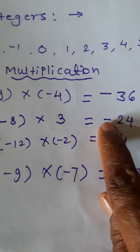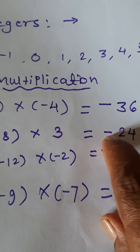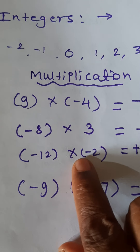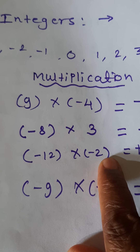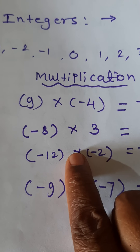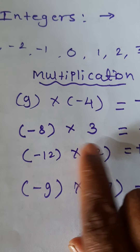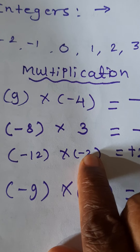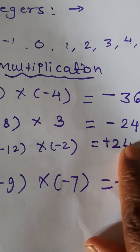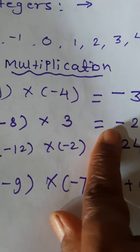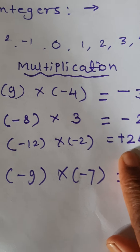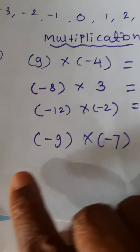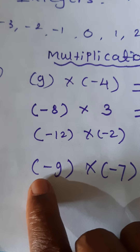Look at the next example: negative 8 multiplied by 3. Here also one number is positive and one is negative, so the answer of the multiplication is also negative. 8 × 3 = 24, and as one number is negative, the sign of the answer is negative — negative 24. Next example: negative 12 into negative 2. As per the rule, when both numbers are negative the product is positive. Negative into negative equals positive. So 12 × 2 = 24 and the answer is positive 24.